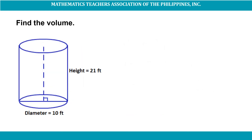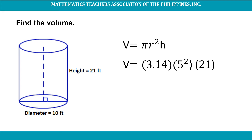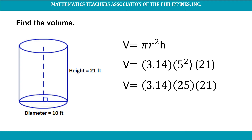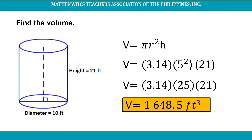Now, try to find the volume of this cylinder given its height, which is 21 feet, and its diameter, which is 10 feet. Again, we are going to use our formula V = πr²h. Since the given is a diameter, we have to find the radius, which is half of the diameter. Half of 10 is 5, so our radius is 5 feet and the height is 21 feet. V = 3.14 × 5² × 21 = 3.14 × 25 × 21. So the volume of this cylinder is 1,648.5 cubic feet.